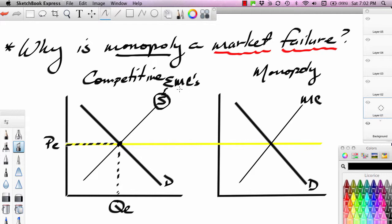So in essence, the summation of all the MC curves of all competitors, all suppliers, that constitutes the market supply curve. So in a competitive setting, the market operates where supply equals demand.